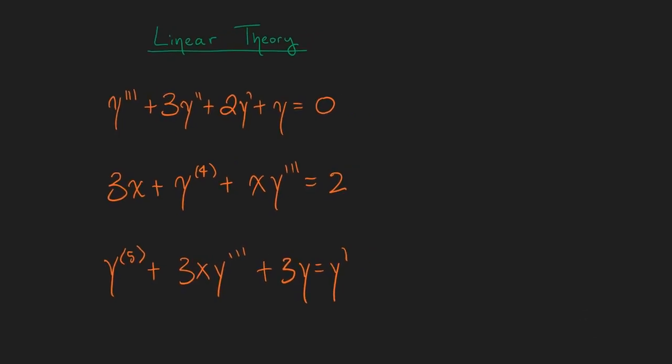In the first example, we see this progression from the third derivative to the second to the first to the solution. It is linear because none of these terms containing y are to any power other than one. We see that each one of these has a coefficient in front of it, and all of that is equal to zero. Since it's equal to zero, this is a homogeneous linear differential equation.